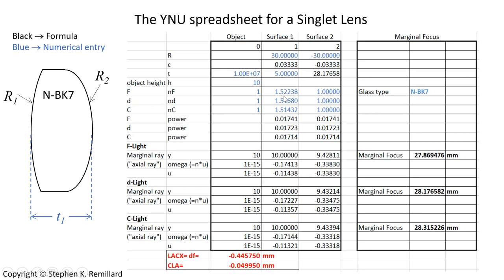The blue entries are input data; the black entries are calculated from formulas. The curvature is just 1 over the radius. It doesn't really matter what you choose for ray height, so I set it at 10 millimeters. The indices of refraction are populated: air on the left and right both have an index of 1, and NBK7 has specific values for F, D, and C light. The powers are calculated, and then the paraxial ray tracing equations determine the height of the ray at each surface. The marginal focus for F, D, and C light is computed from a triangle, and from that we calculate DF — the difference between F and C light marginal focus.